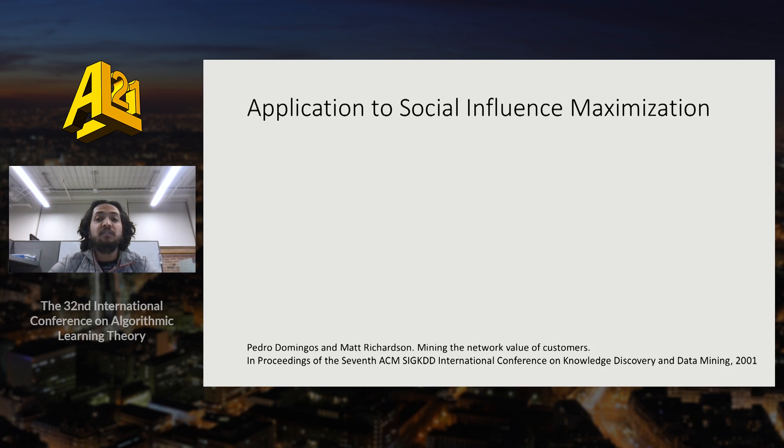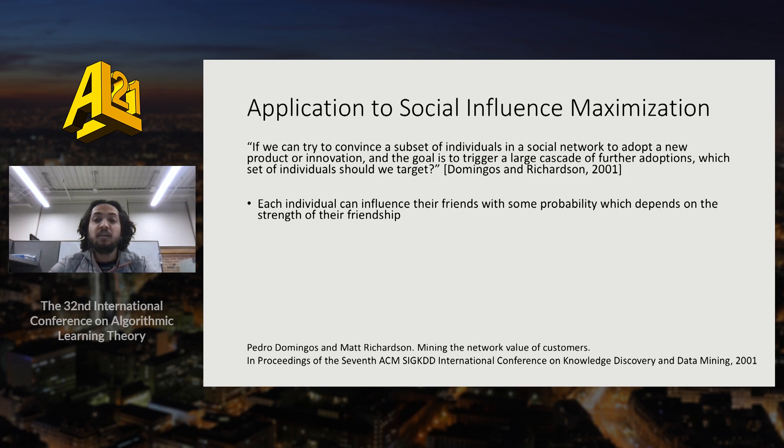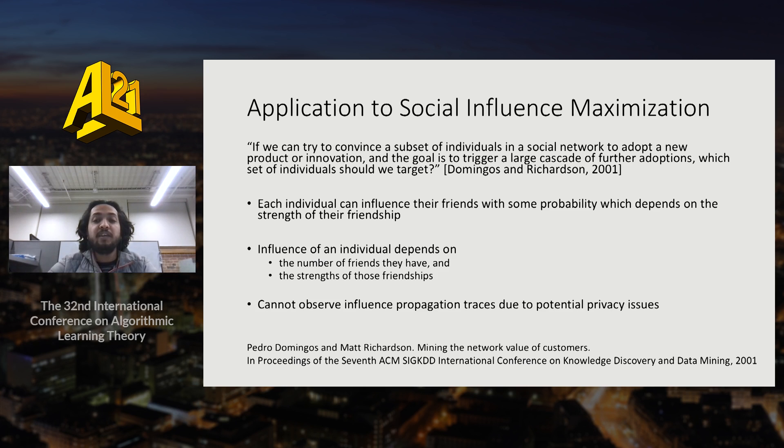To empirically evaluate, we choose the problem of social influence maximization. We start with K individuals trying to trigger a cascade of influence in the network of N individuals and each individual further influences its neighbor with certain probability. The total influence of an individual depends on the number of their friends and the strengths of those friendships. We aim to find an algorithm that does not obtain individual influence propagation traces to avoid privacy violations.